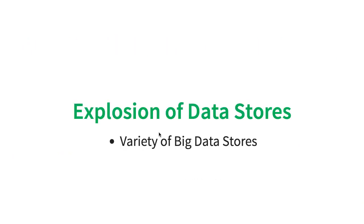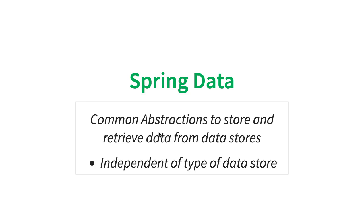The other factor that has also happened in parallel is the explosion of data stores. We are not only talking to relational databases. Earlier, JPA was the main way most people connected to relational databases — and that's fine. Whenever you use a relational database, JPA is a great way for doing simple transactions. But today we talk about big data, about MongoDB, Cassandra, and Hadoop. That's where Spring Data comes in.